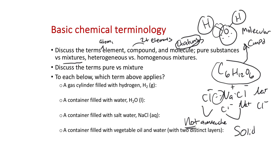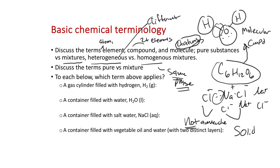A mixture can be a solid dissolved in a liquid, two liquids mixed together, or even two liquids that don't mix. We can have heterogeneous mixtures and homogeneous mixtures. Homogeneous mixtures are all mixed together perfectly — the same phase. Heterogeneous means the two liquids aren't mixing together, like oil and vinegar, or two different solids not mixed perfectly. A homogeneous mixture would look uniform throughout; a heterogeneous mixture would not look uniform throughout.